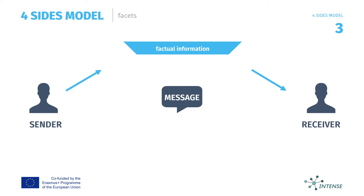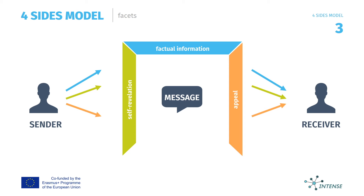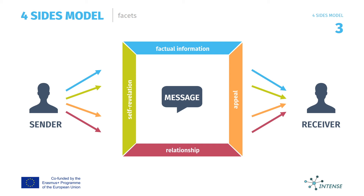Second, there's the layer of self-revelation: what did the sender tell about him or herself, and on the other hand, what did the receiver hear about the sender? Third, there's the layer of appeal: what does the sender want the receiver to do or not to do, and what did the receiver hear the sender wants him or her to do?